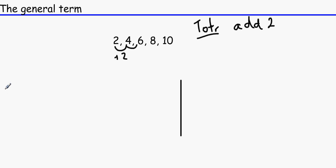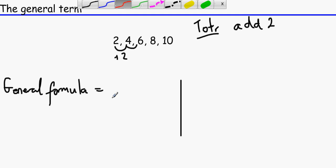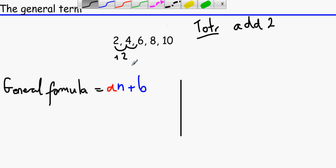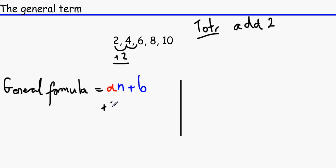Now, the general formula — as you might also remember — the skeleton of that is AN plus B. The A: you substitute the term-to-term rule for that. So the term-to-term rule is add two, giving us 2N plus B. This B stands for the term before the one they gave you, that you started with. So if you go back one, two minus two is zero. So the previous term to the first term given is zero, and we write zero here. So the general formula is 2N.